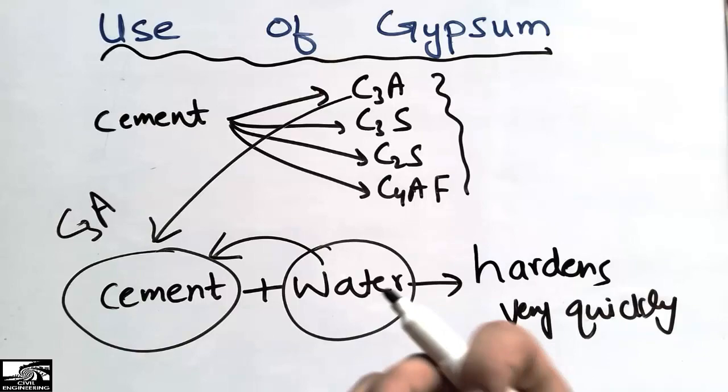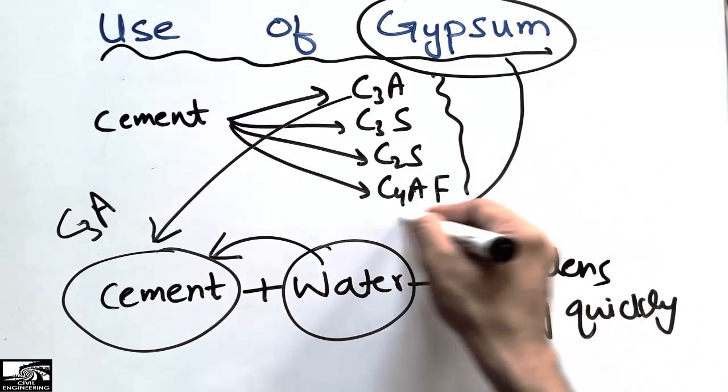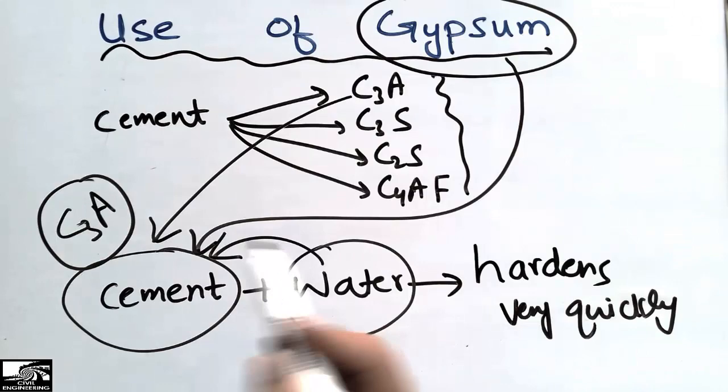So what we do, in order to slow the hardening rate of the cement, we add gypsum in the cement so that this component is now in control. When water is now added due to the gypsum, the cement hardening rate is now low.